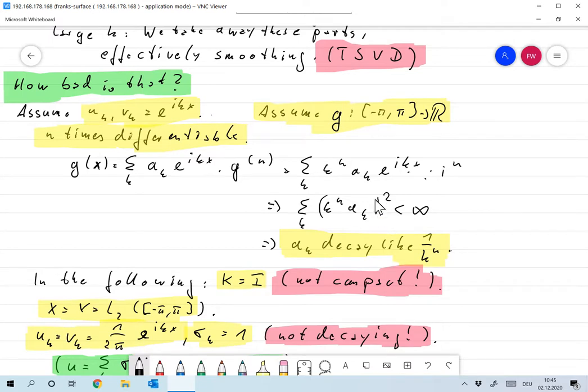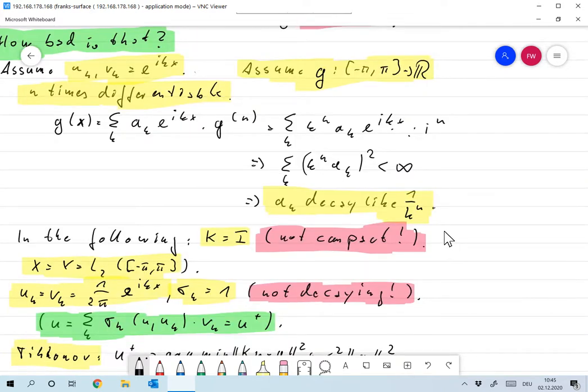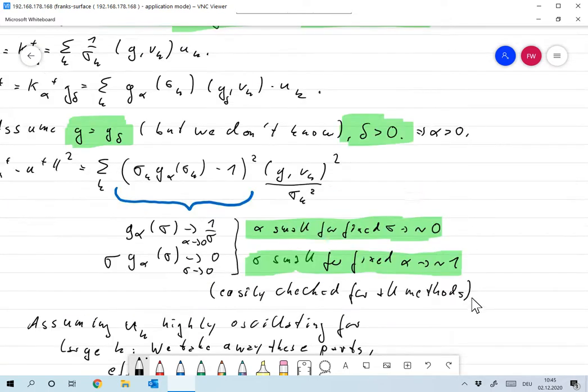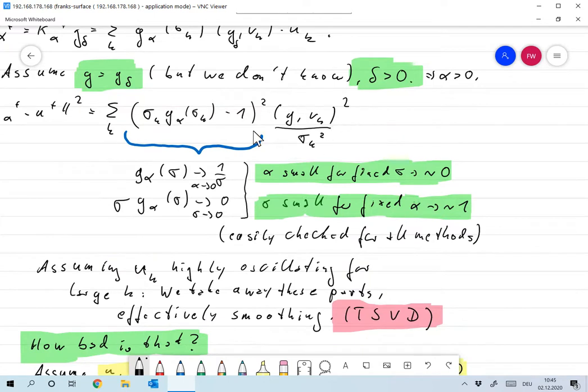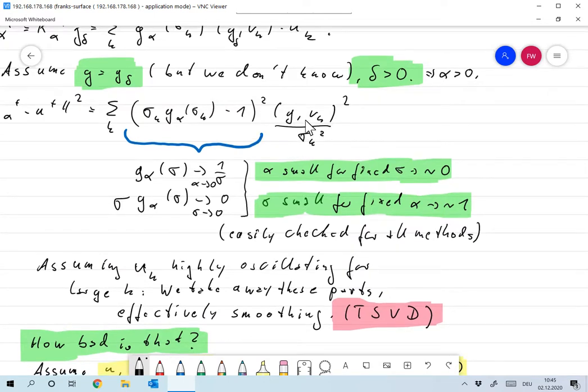Sum over all k, k to the n a k square is less than infinity and that means that a k decays like one over k to the n. So it's not only that this function gets small but it even gets small by a dedicated rate. If the whole thing is n times differentiable then we find that it even goes with one over k to the n.